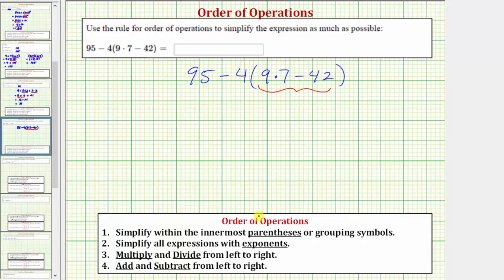Referring back to the order of operations, we multiply and divide before we add and subtract. When simplifying inside the parentheses, we find this product first. Because 9 times 7 equals 63, this simplifies to 95 minus 4 times the quantity 63 minus 42.